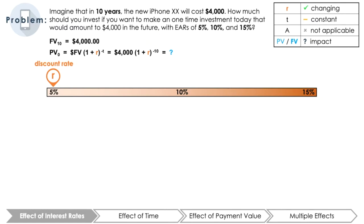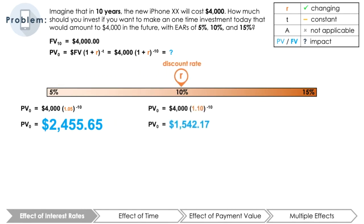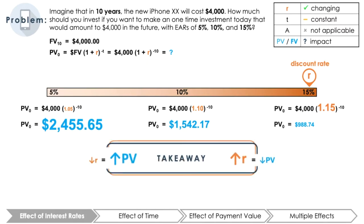Plugging the discount rates given in the problem into the PV formula, you should have calculated PV equals $2,455.65 when R equals 0.05, or 5%. PV equals $1,542.17 when R equals 0.1, or 10%. From this example, we can see that the PV of the $4,000 future value of the iPhone 20 decreases as the effective annual rate increases.